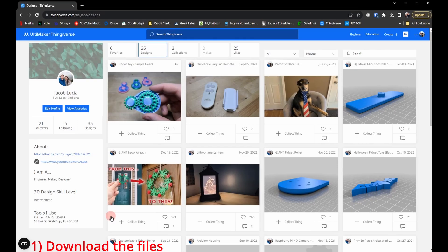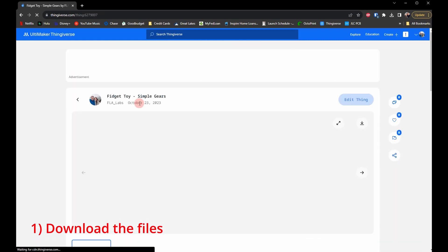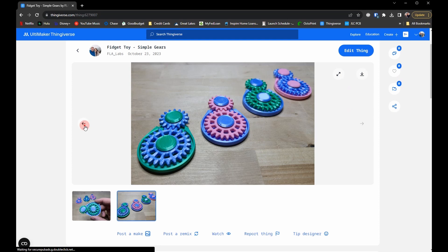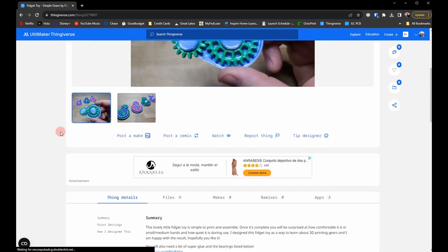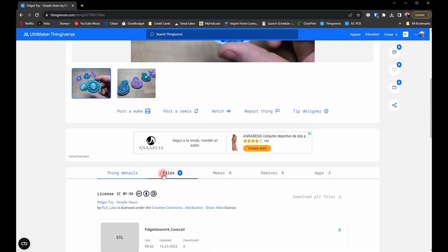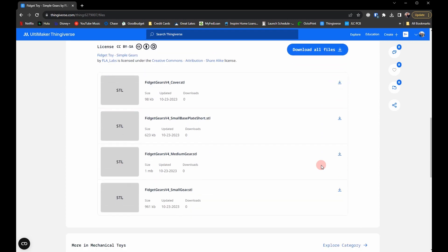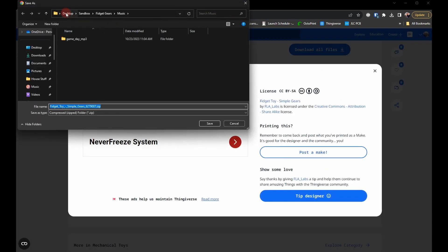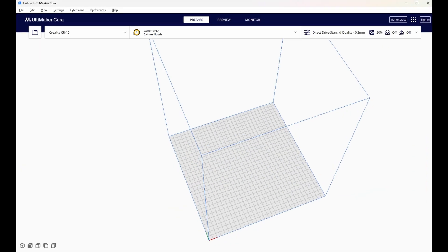First you'll want to head over to my Thingiverse account and download the files. There you'll find four files to download: one for the base plate, one for the medium gear, one for the small gear, and one for the covers. Download them all to your machine and then open up your slicer.